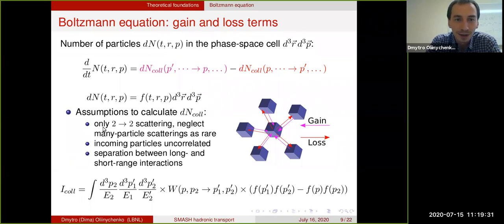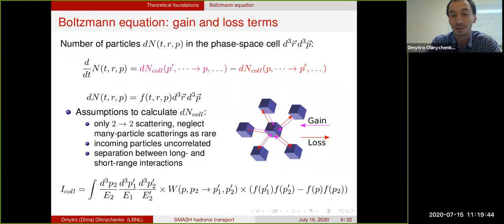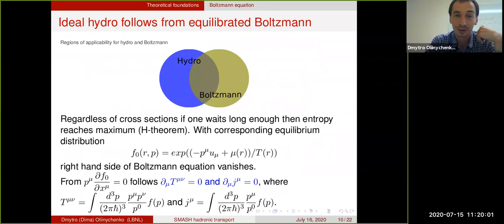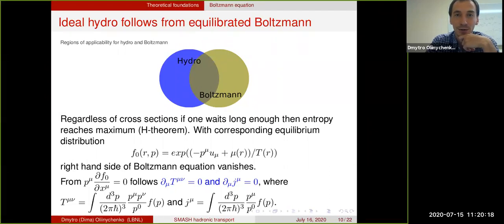A few assumptions: you assume that particles entering every collision are uncorrelated, and in this Boltzmann equation you just have two-to-two collisions. You also assume a separation between longer-range potentials and short-range interactions which go into the collisions. After these assumptions you have the Boltzmann equation. Why is it good? It has a nice property called the H-theorem — you have to prove it — which means that entropy, if you calculate it within this equation, is always growing or staying constant, regardless of the cross sections of collisions that you put in.